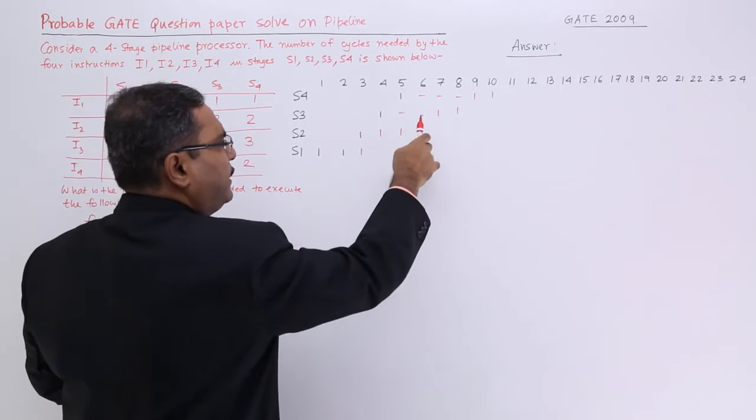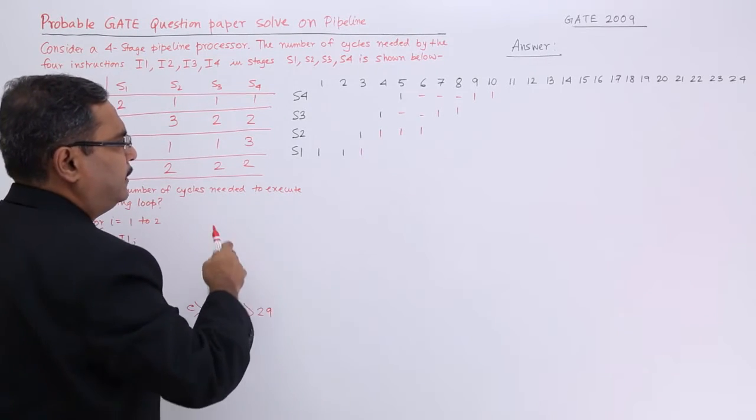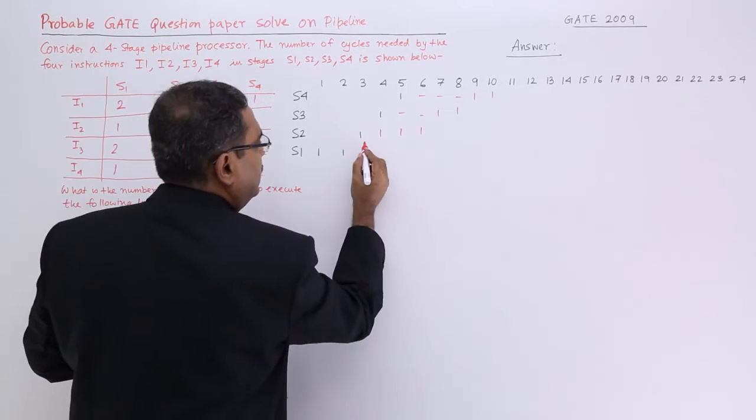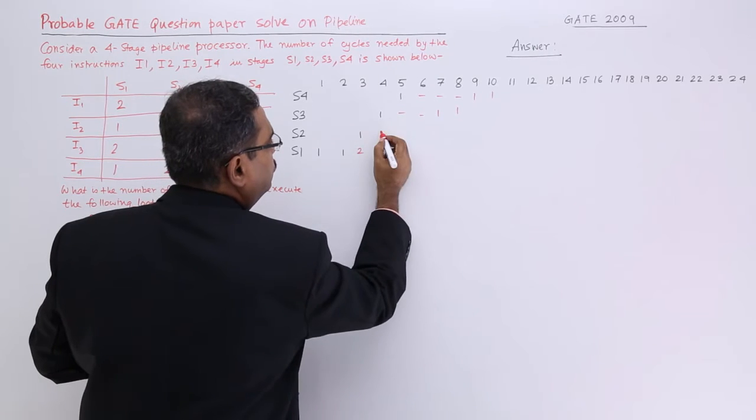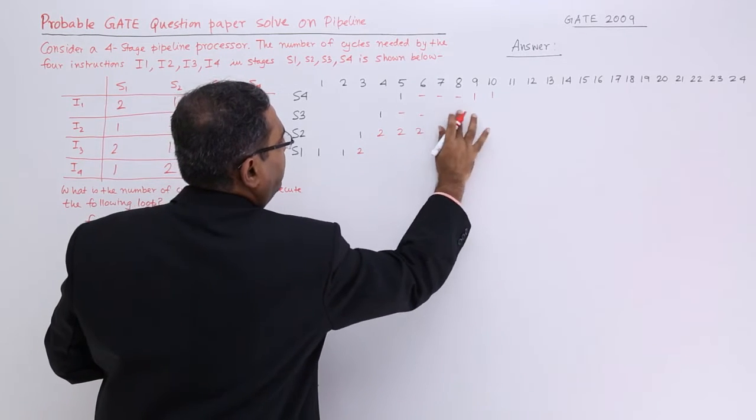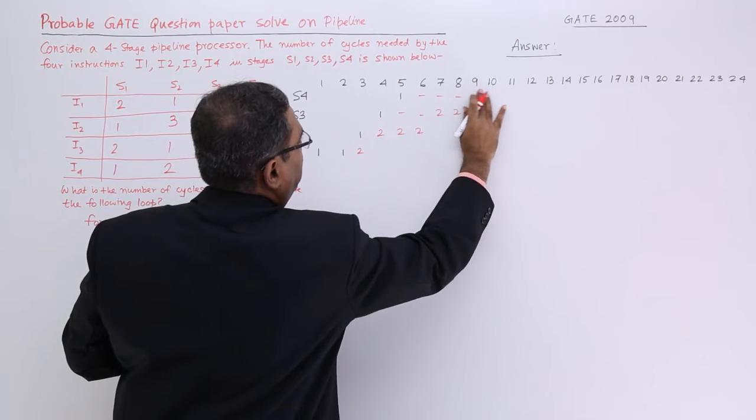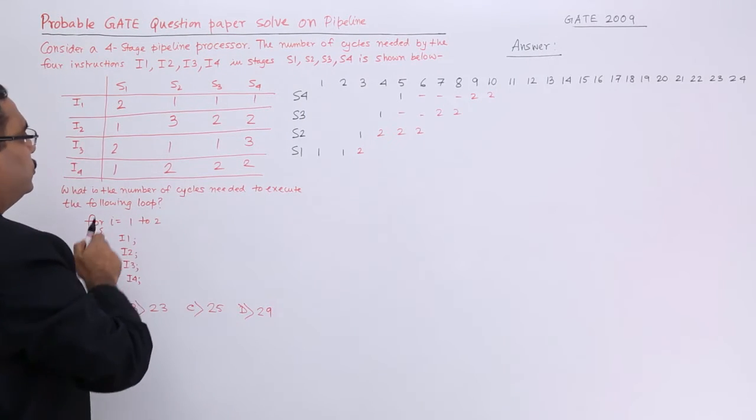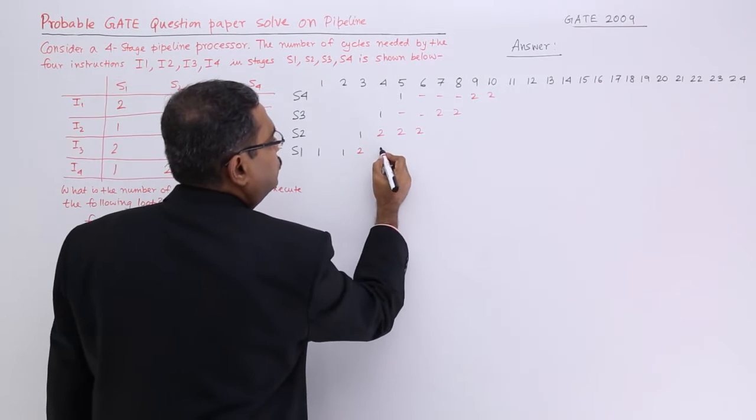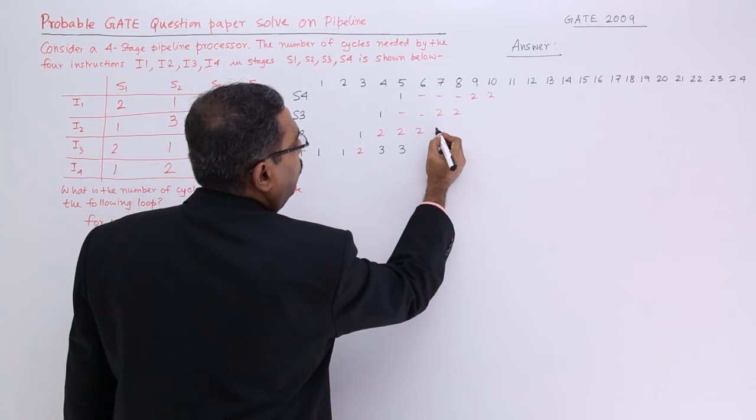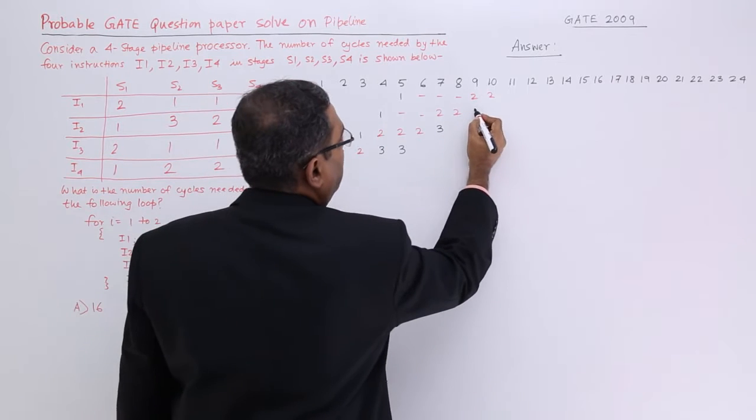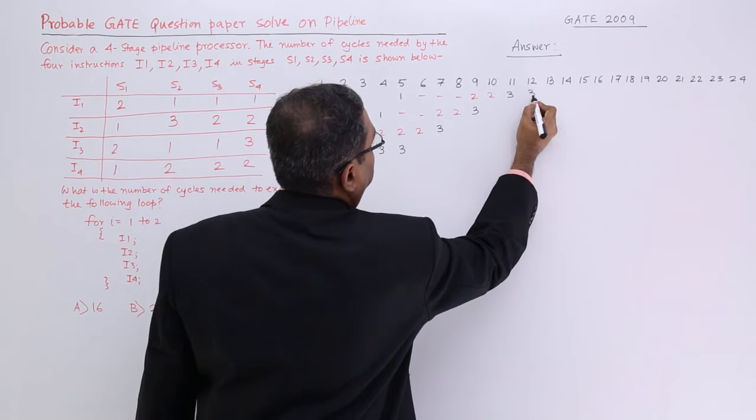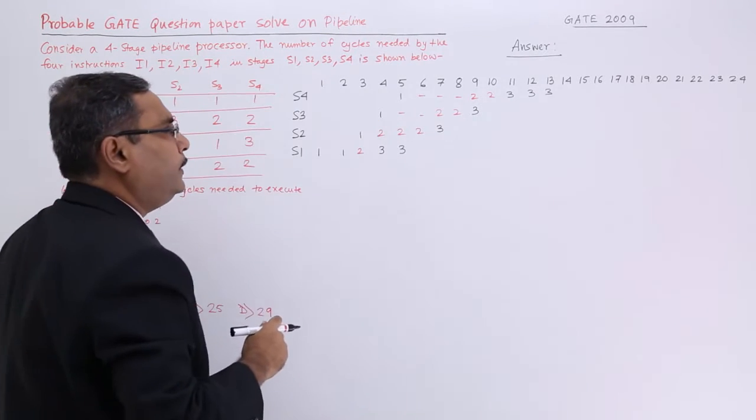Next time I shall not write 1, I shall write the respective instruction number. I think it will be better. So whether you can feel that I am executing instruction number 2, that will be better. Next one is 3. So 2, 1, 1, 3. Then 2, 1, 1, and then 3.